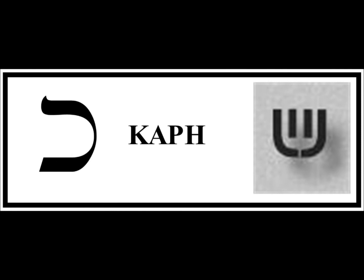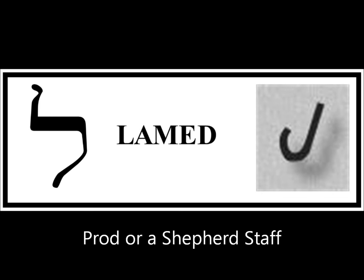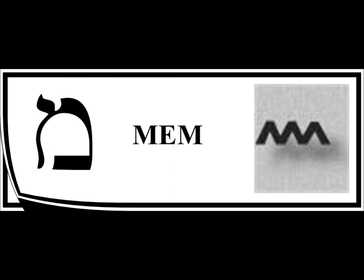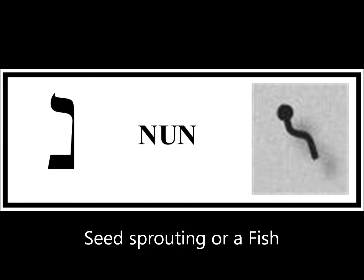The next letter is Kaf. It has a K sound, and its numerical value is 20. It also has a final form, and it has a picture of the palm of a hand. Lamed has an L sound. It has a numerical value of 30, and it is a picture of a shepherd's staff or a prod. Mem has an M sound. It has a final form also, and its numerical value is 40. Mem usually represents water. Nun has an N sound, also has a final form. Its numerical value is 50, and its pictogram is sometimes described as a fish or a seed that is sprouting.